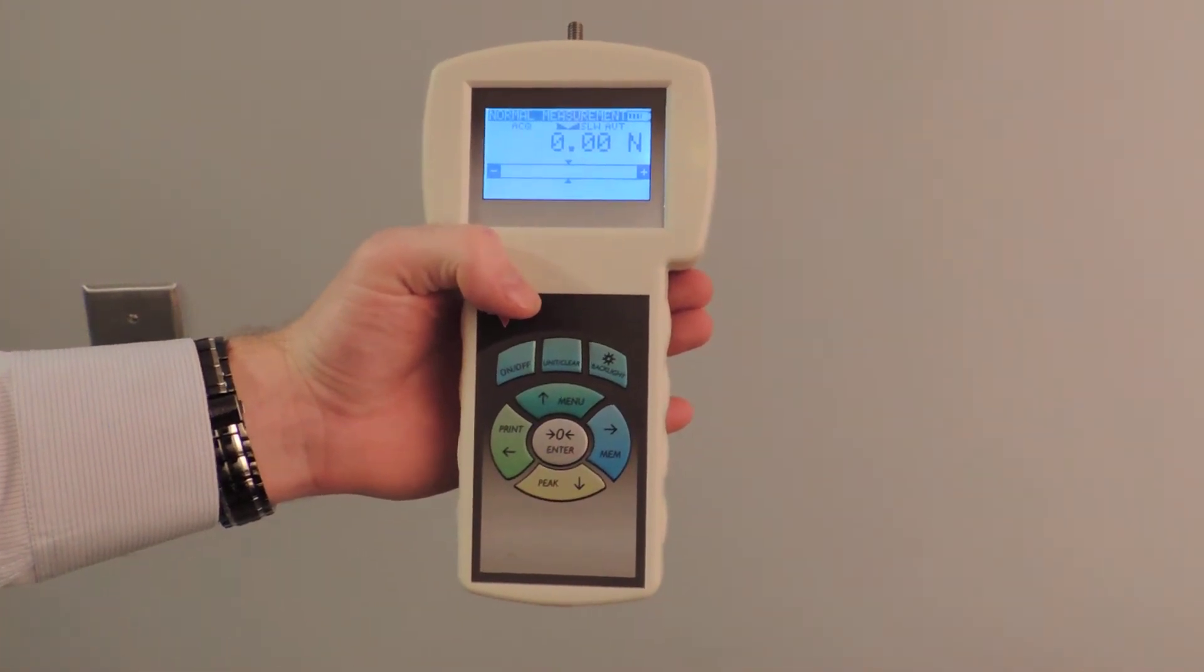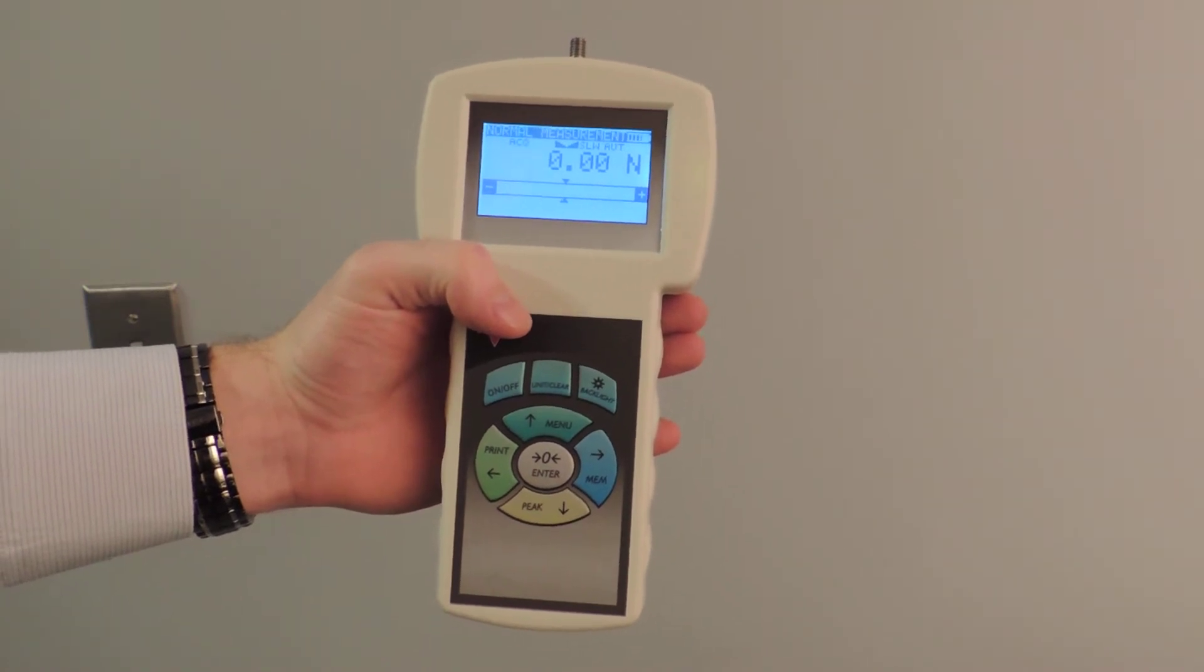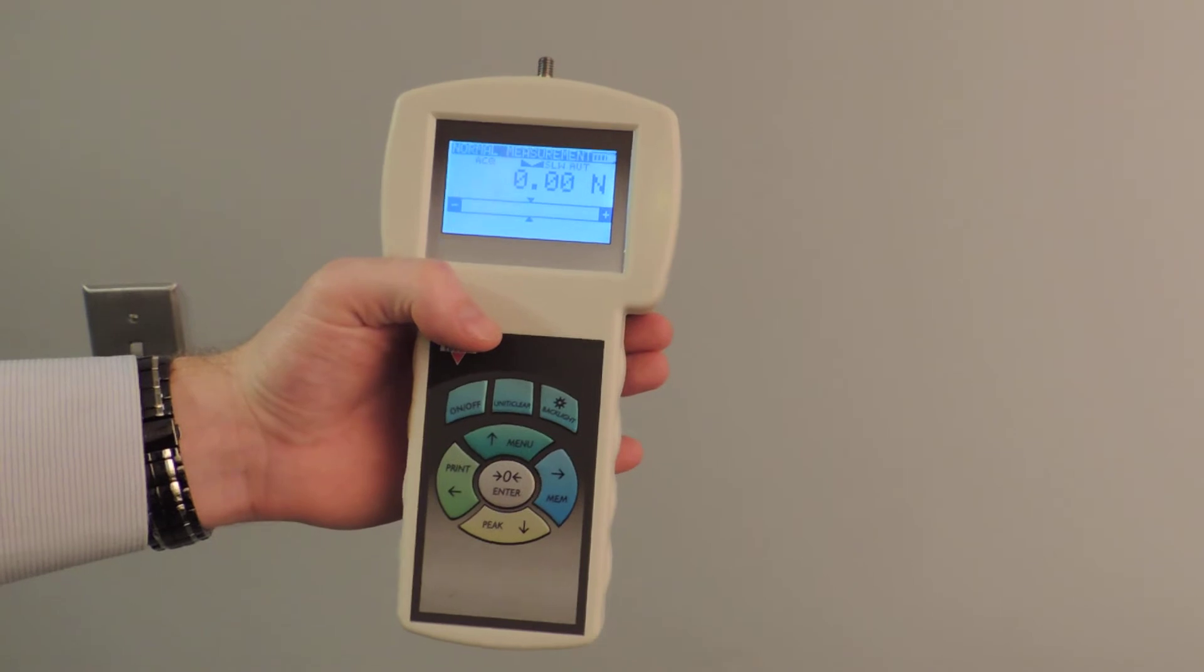Today I'm going to demonstrate the Torbell FA series force gauge with internal load cell. The internal load cell models are perfect for taking force measurements up to 500 newtons.